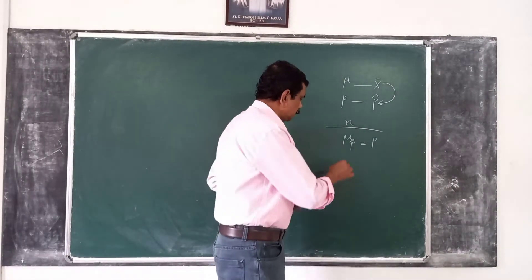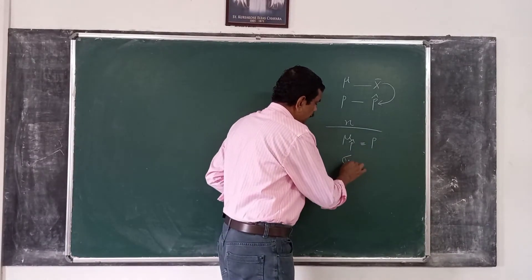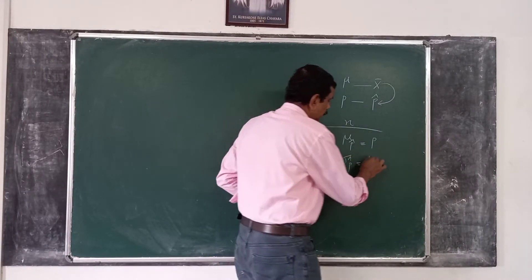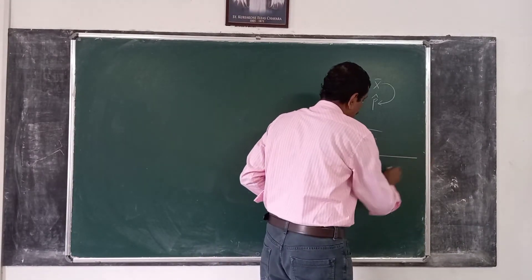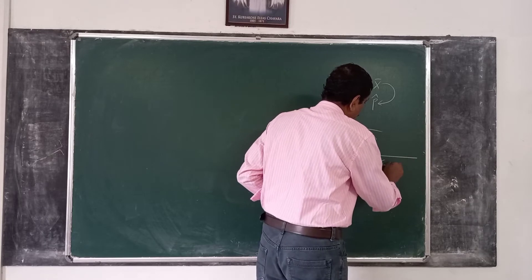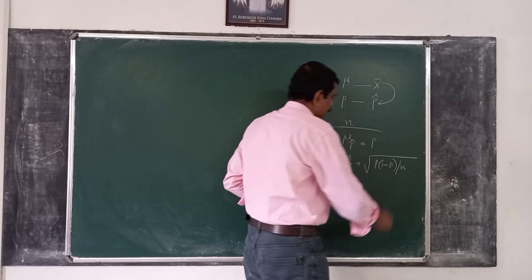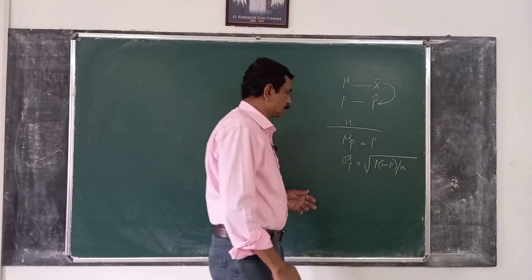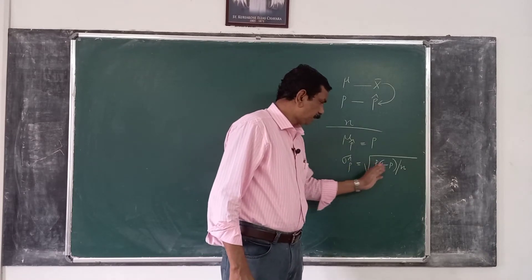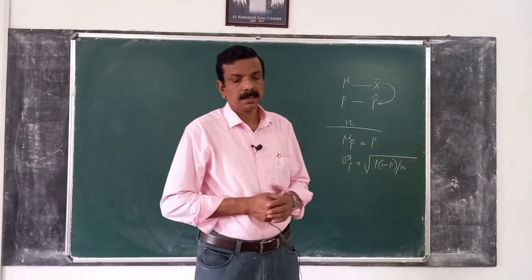And the standard deviation of p-hat is equal to the square root of p times (1 minus p) divided by n.